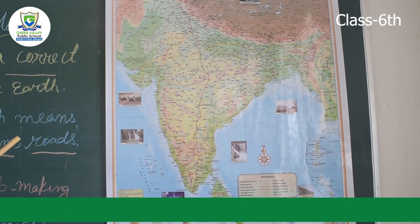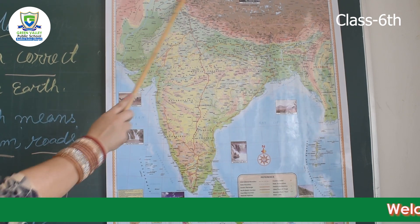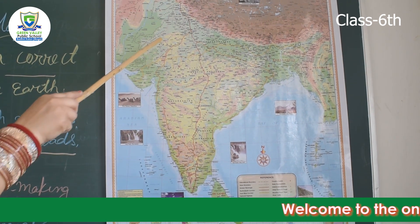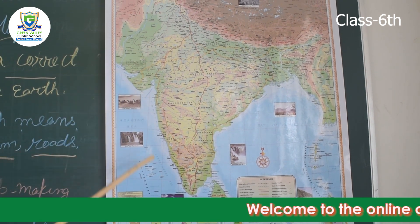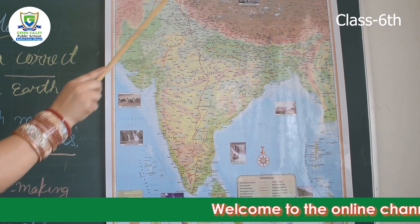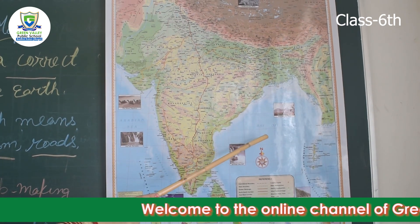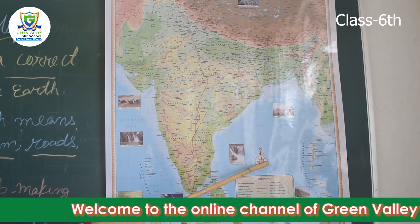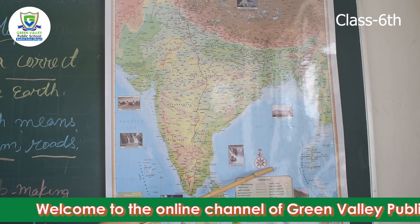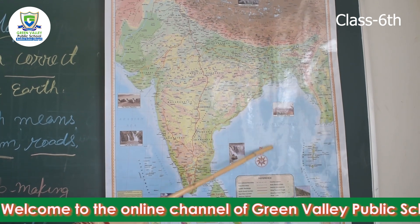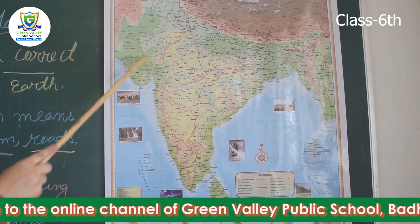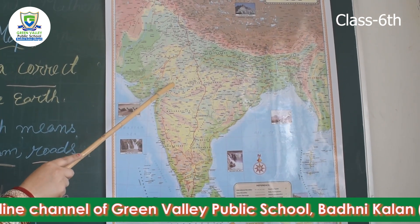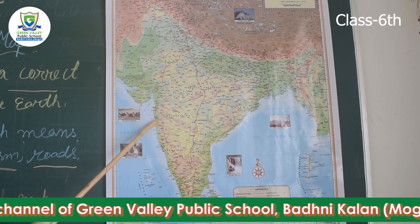Here you can see a map at large scale. It is also represented with a variety of colors — blue for oceans, lakes, and water bodies, and yellow for the continents.